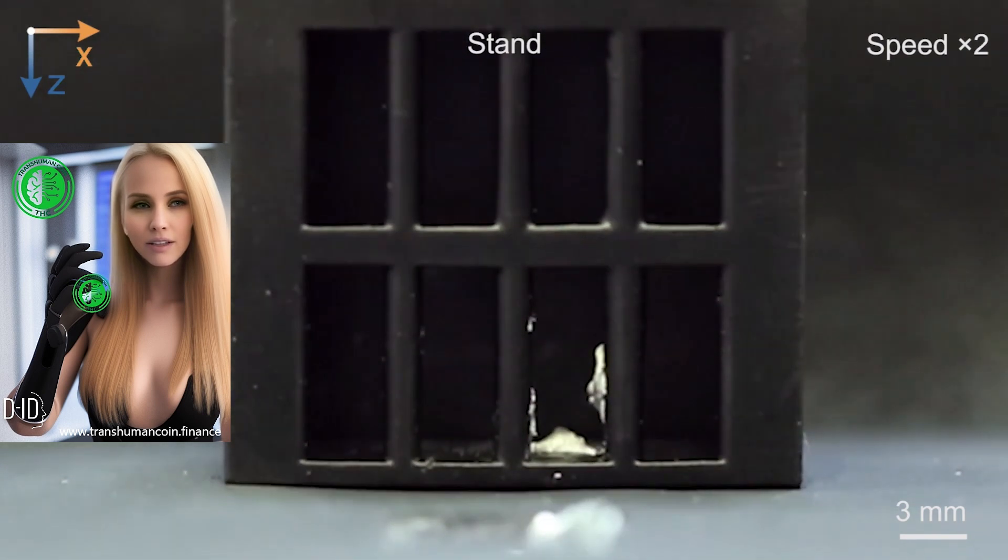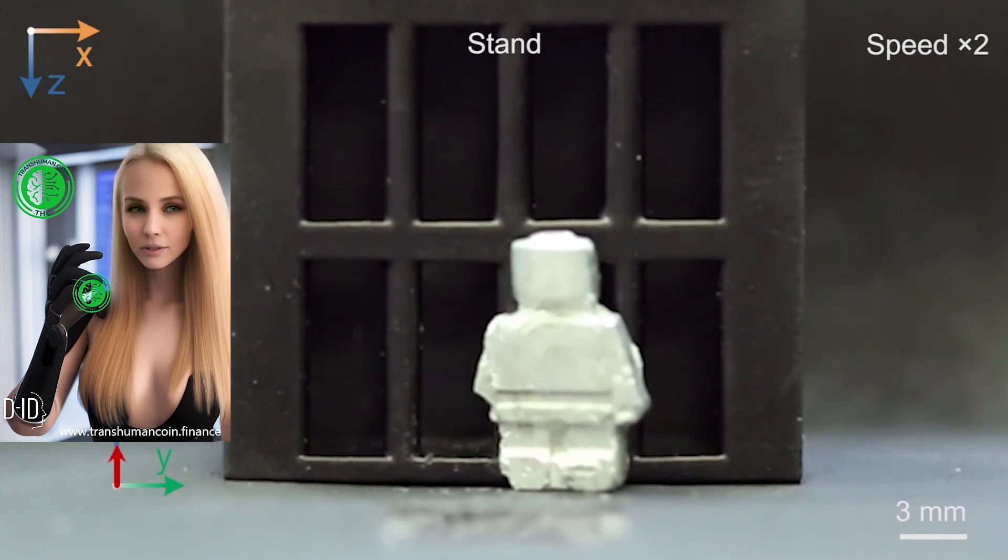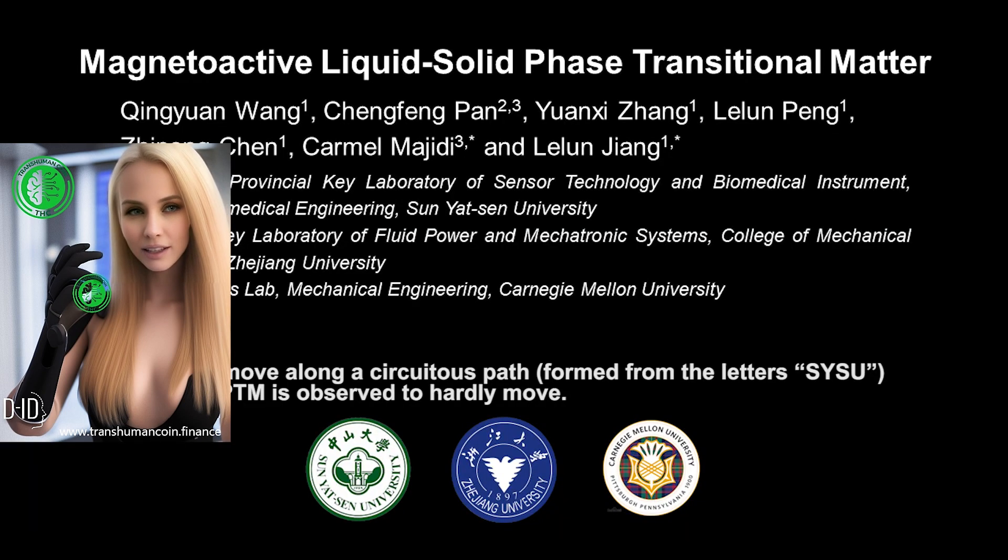Gallium, it should be noted, is a metal with an incredibly low melting point of only about 85.6 degrees Fahrenheit, or 29.8 degrees Celsius.